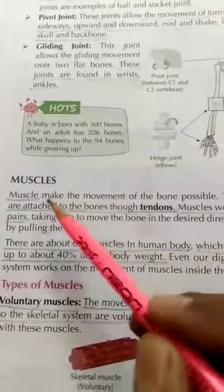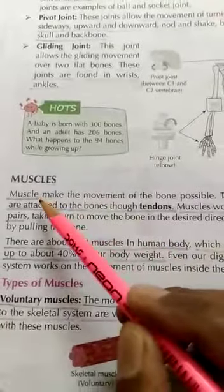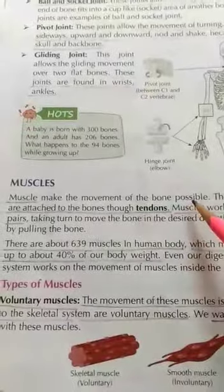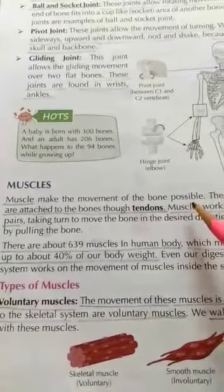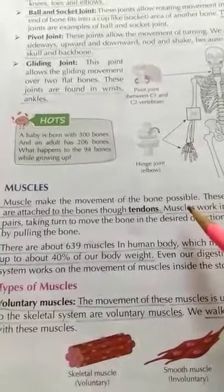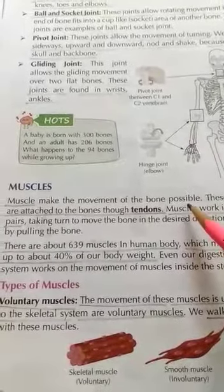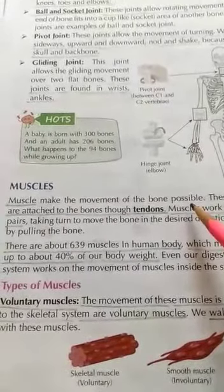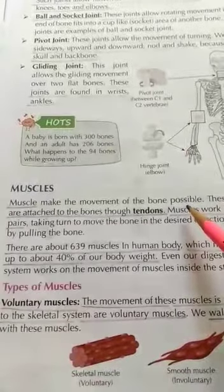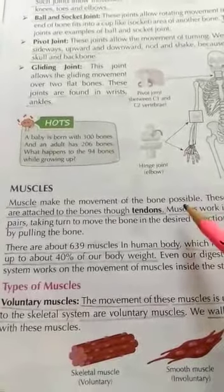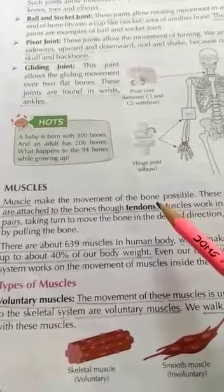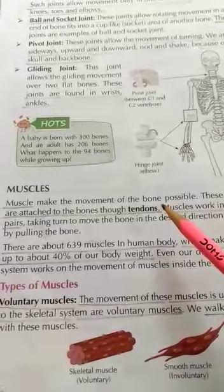Muscles make the movement of the bone possible. Bones cannot move of their own. Our bones take the help of the muscles for movement. The bones and the muscles work together to give shape and movement to the body.